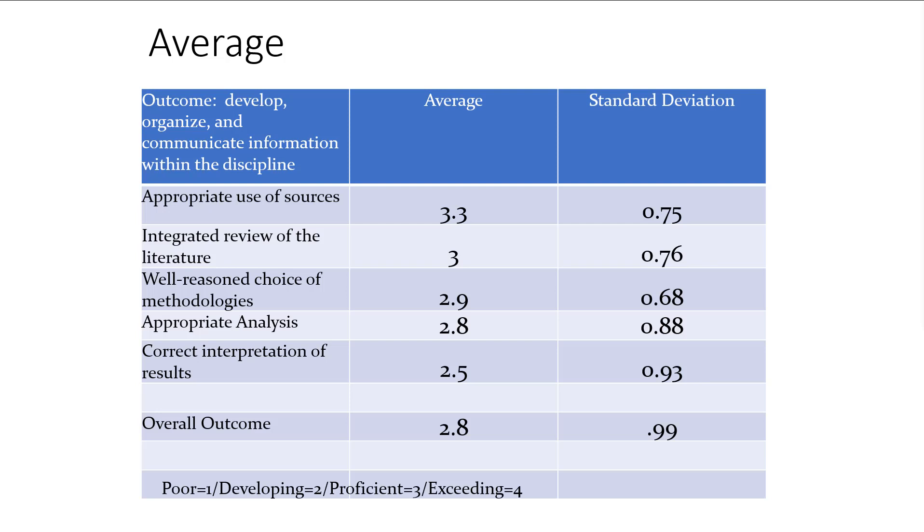When we want to know on average how students have scored, we typically use the mean, and these can be calculated for each subscore or for the whole outcome. In this case, the subscores range from 2.5 to 3.3, and the overall for the communication outcome is an average of 2.8.